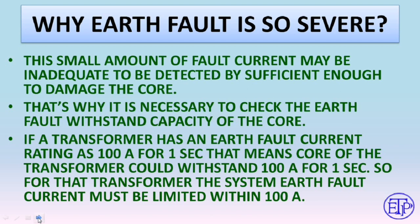Every machine with a core, like a transformer or generator, has an earth fault current rating. For example, a transformer may be rated at 100 amperes for 10 seconds — meaning the core can withstand 100 amperes for that duration. The system earth fault current should be restricted to this rating. Before installing any transformer or NGR (neutral grounding resistor) system, we must ensure the maximum earth fault current carrying capacity of the core and restrict the earth fault current within that capacity.